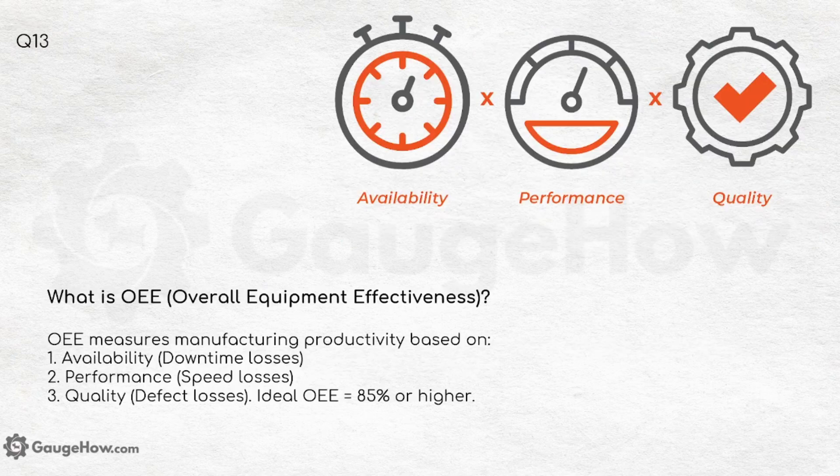What is OEE — Overall Equipment Effectiveness? OEE measures manufacturing productivity based on three parameters: availability (downtime losses), performance (speed losses) and quality (defect losses). The ideal OEE is 85% or higher, and always remember the minimum acceptable limit is 80–85%.